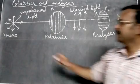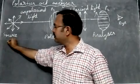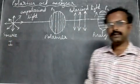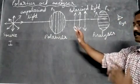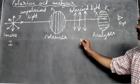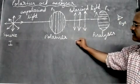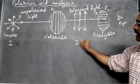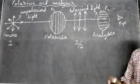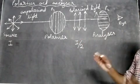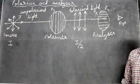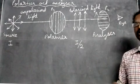One more thing: if the source produces light of intensity I, the polarizer restricts light rays to vibrate only in one direction, so the intensity of light becomes I/2 — it becomes half. So this is what you need to know about the polarizer and analyzer. Thank you for watching.